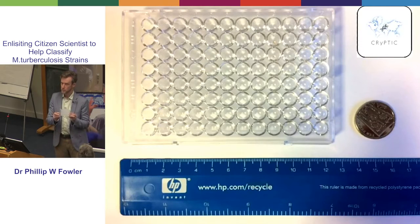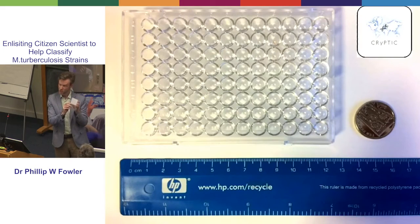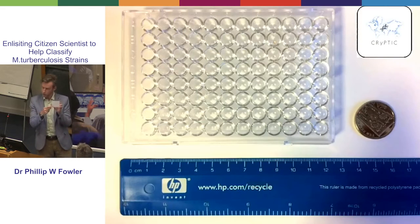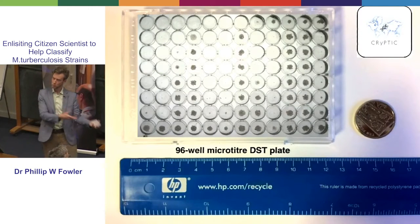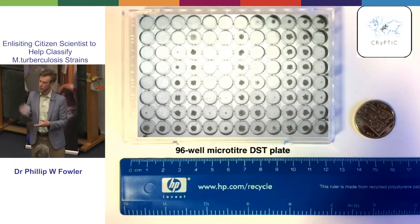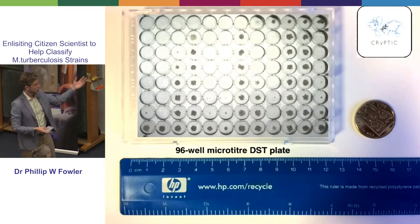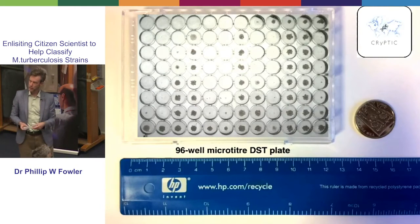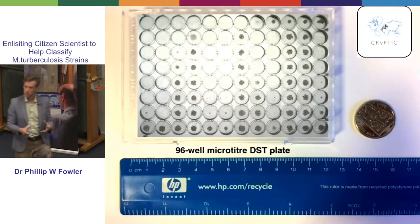It's a 96-well plate, but this one's been specifically developed for TB. Each little well has in the bottom of it a little dried-on amount of an antibiotic that works on TB. There's only 14 antibiotics on here, and they all have different concentrations of drug. So what you do is you take the sample from a person, you grow it for a bit, and then you inoculate it onto the plate and you leave it for two weeks to grow.